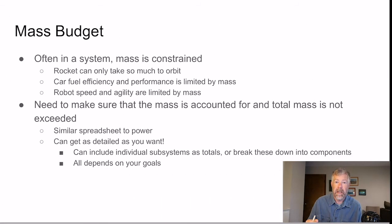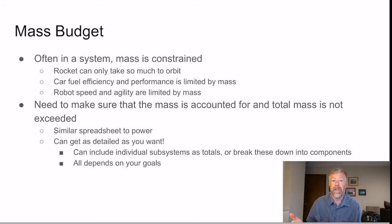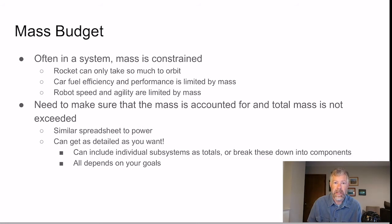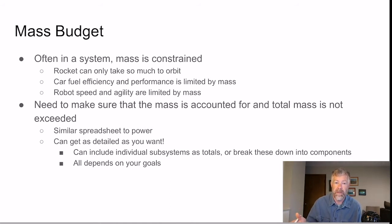Now let's do the same thing for mass. In many systems, mass is constrained. You can't have infinite mass because, for example, rockets can only take so much to space — they have limitations on how much mass they can carry to a given altitude, or to Mars or the Moon. So you need to make a budget to keep track of exactly how much mass you want to take.